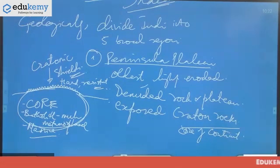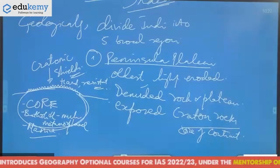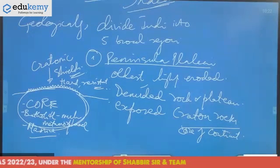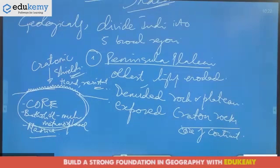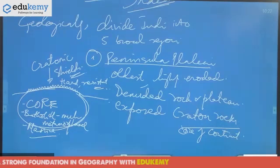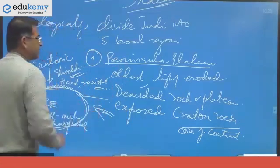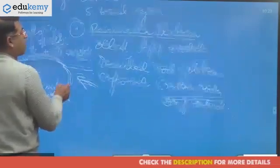Kratonic shields are very hard, very resistant rocks. So the Peninsular Plateau of India is something like that — very old, highly eroded, highly denuded rocks and plateaus. The core is plutonic or deep-seated; dikes are hyper-basal formations and are not part of the core.